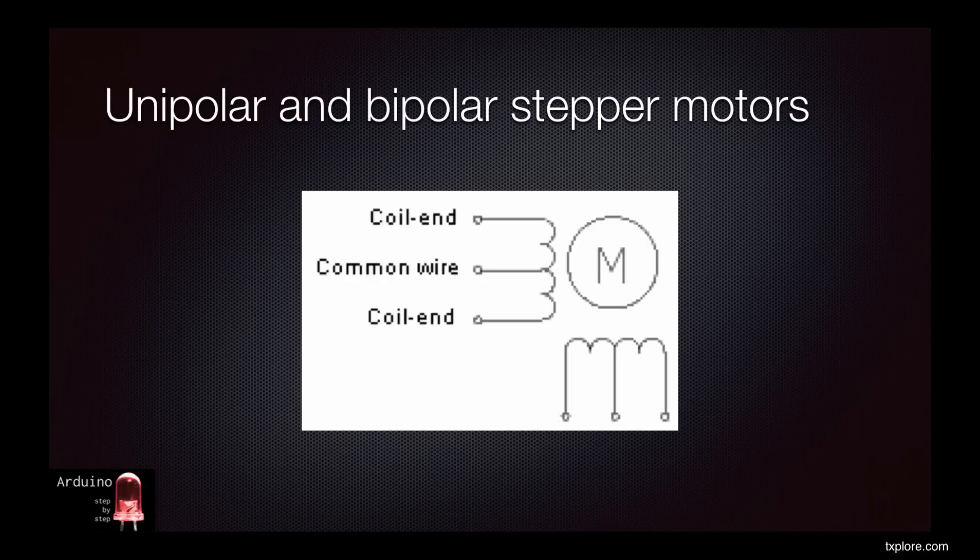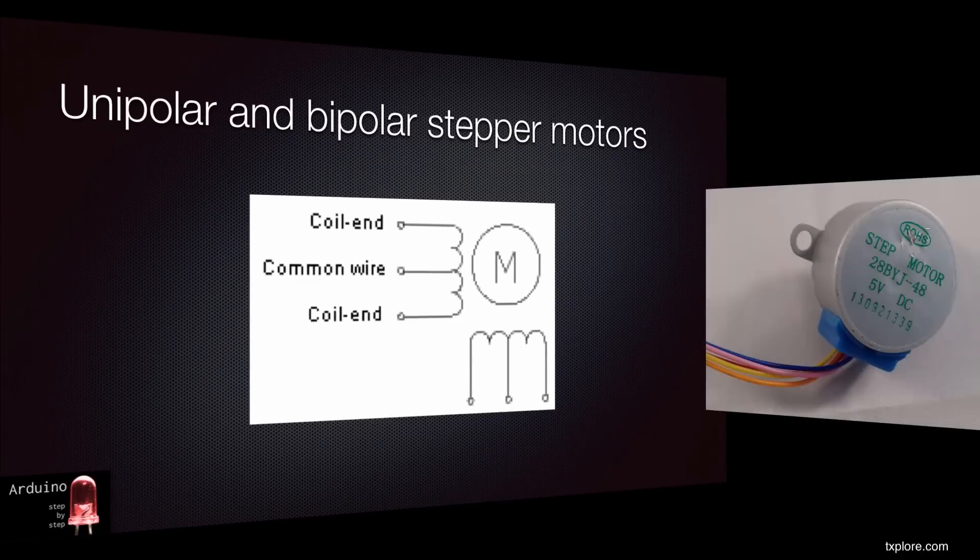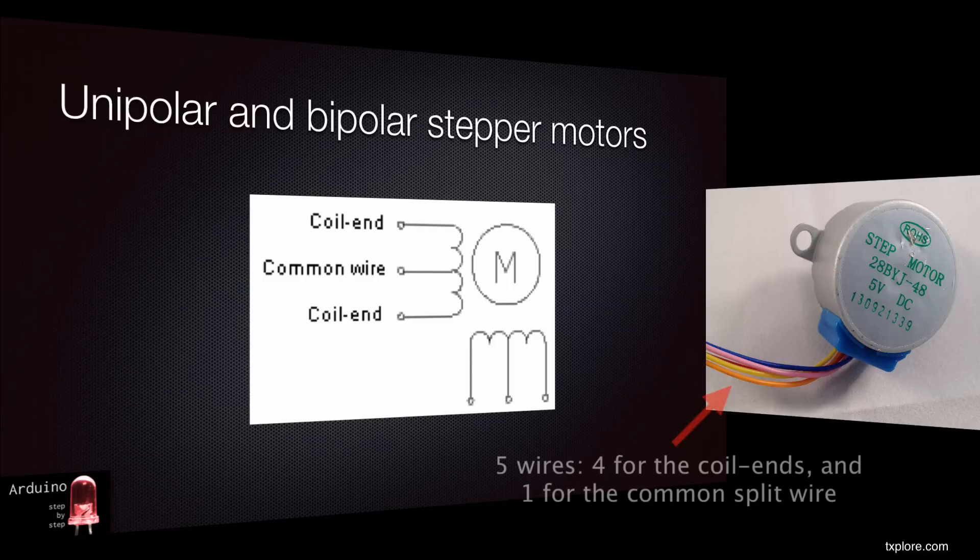In most cases, the wire that is used to split each coil is common between the two coils. You can identify two-phase unipolar stepper motors by the total number of wires that come out of it. They have five wires, two for each coil, plus one common from the middle split of each coil.